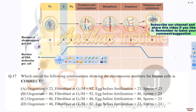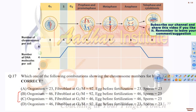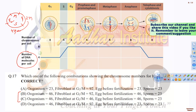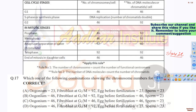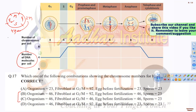Coming back to choices B and C: whenever we talk about the cell cycle — G1, S, G2, M — when a cell moves from G1 into S phase, duplication occurs. But what exactly is getting duplicated? It is the DNA, not the chromosomes. The chromosome number maintains its consistency, because the definition of chromosome depends on counting the number of functional centromeres.